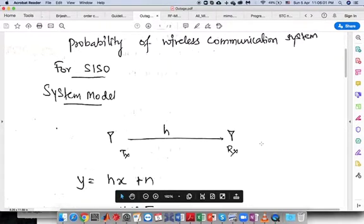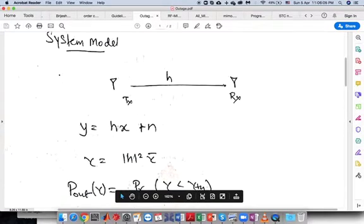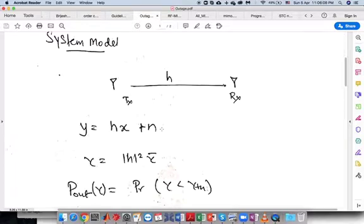This is the system model we will start with to analyze the outage probability. y equals hx plus n is the input-output relation.